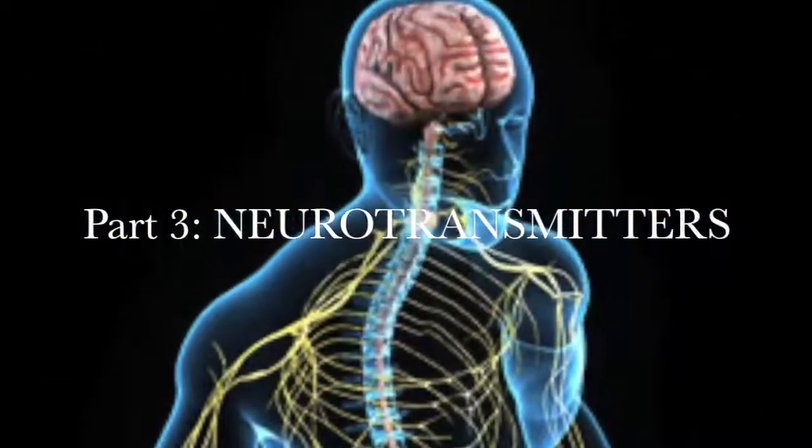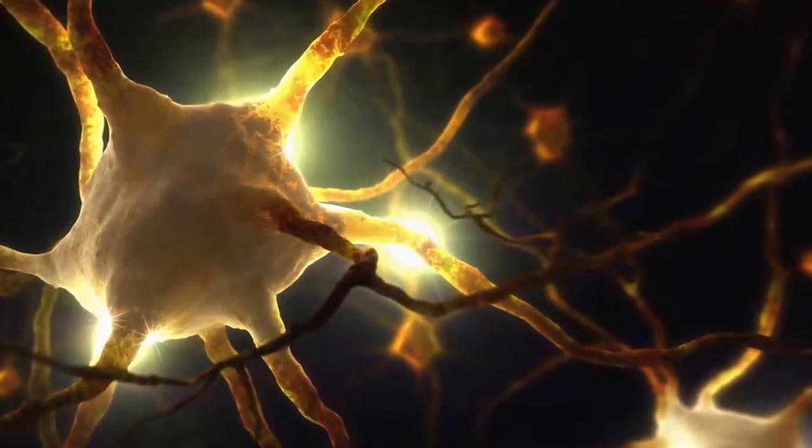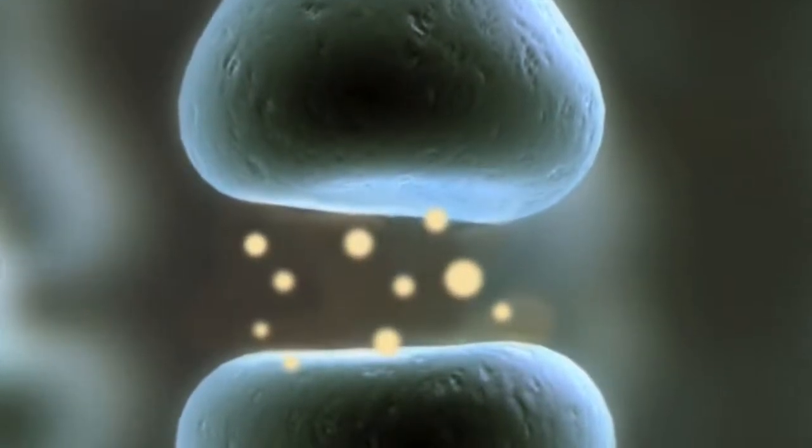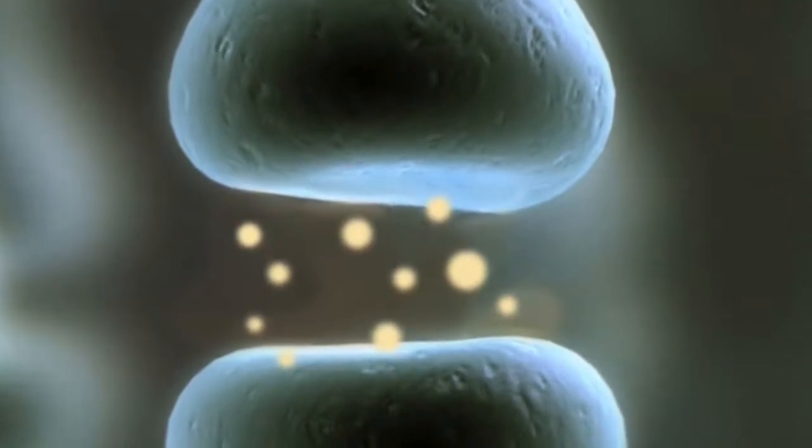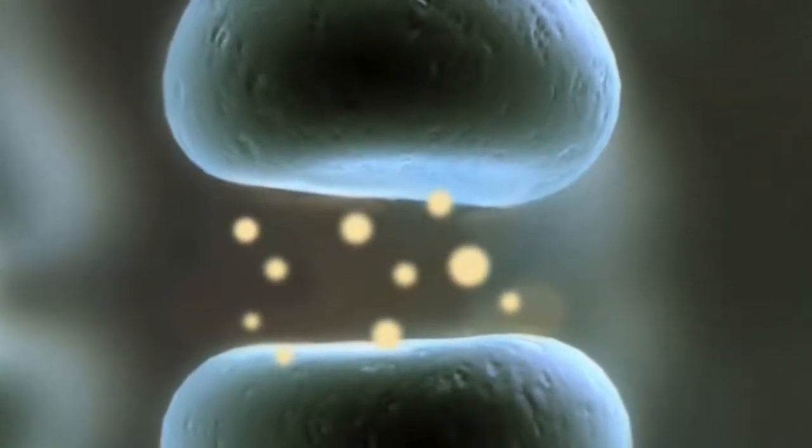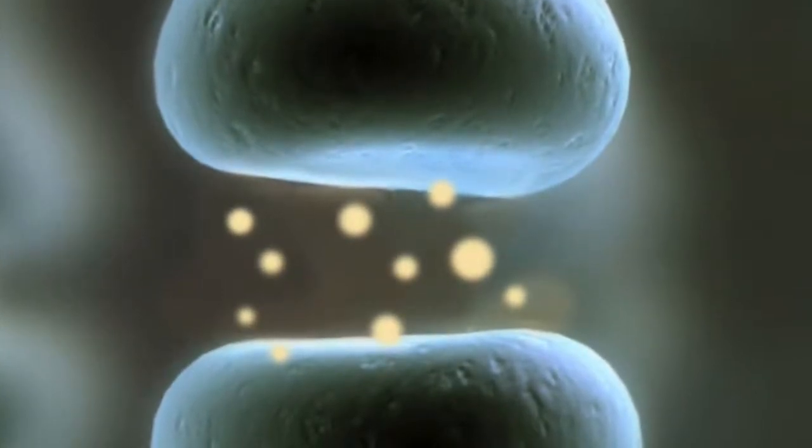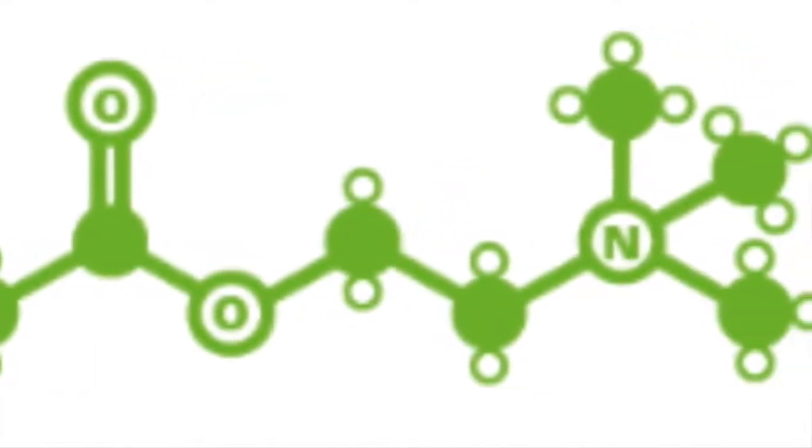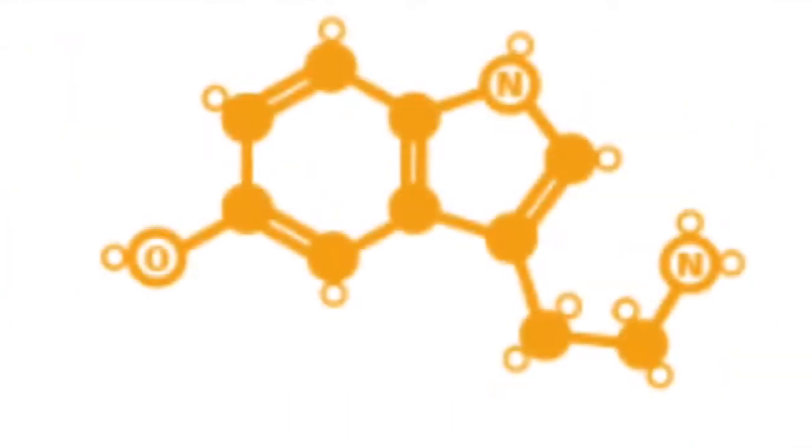Neurotransmitters are the chemical messengers used to send information throughout the brain and the body. Over a hundred neurotransmitters have been identified. Some key neurotransmitters and the messages they send are acetylcholine, which aids in learning, attention, alertness, and muscle movement.